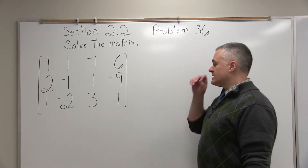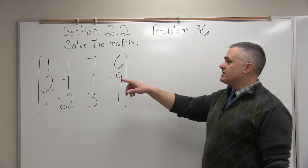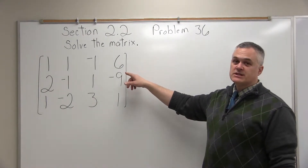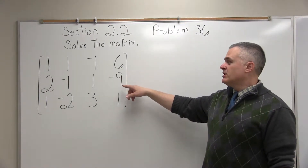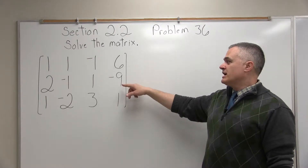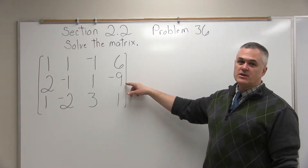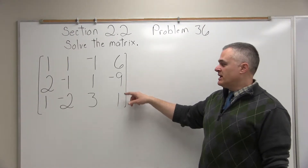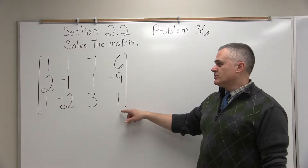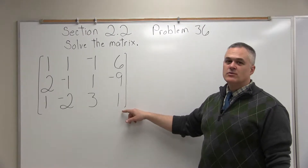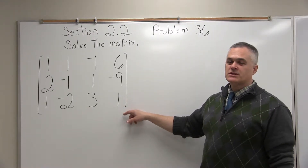It says solve the matrix, and our matrix has 1, 1, negative 1, 6 in the top row; 2, negative 1, positive 1, negative 9 in the middle row; and the bottom row is 1, negative 2, positive 3, positive 1.